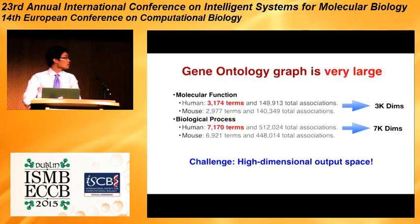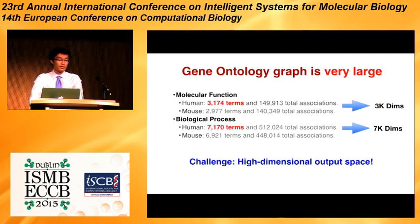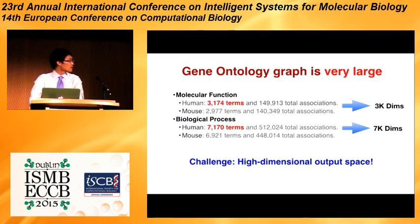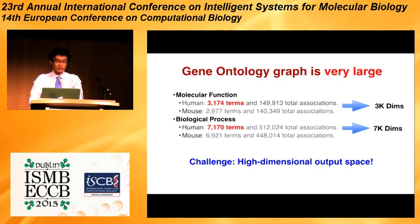Besides this special DAG structure, the gene ontology graph is also very large. For example, in the human biological process data, there are more than 7,000 GO terms. So if we assign one dimension to each GO term to represent the gene ontology graph, we will have an output space with more than 7,000 dimensions. So besides a very large input network, we will also have a very large high-dimensional output space. Our contribution is to view the entire gene ontology graph as a high-dimensional output space and do prediction on this challenging dataset.